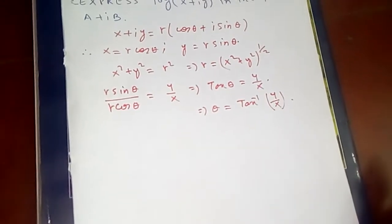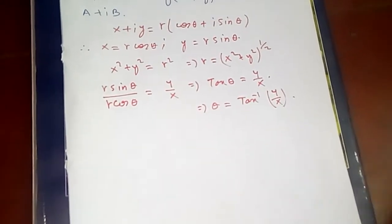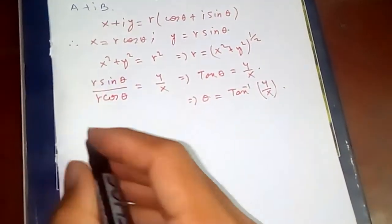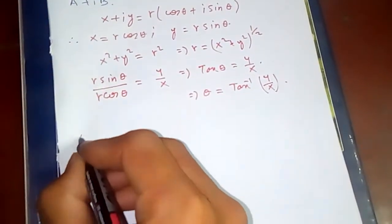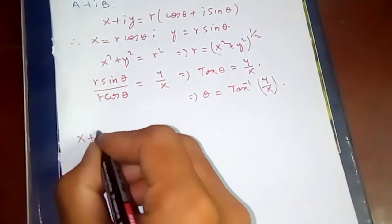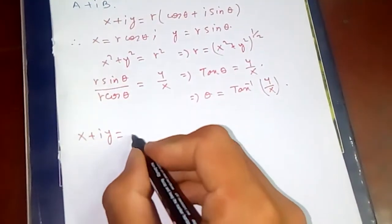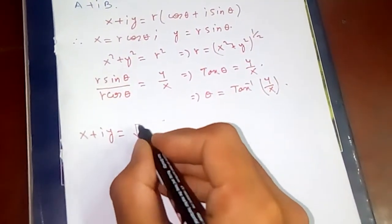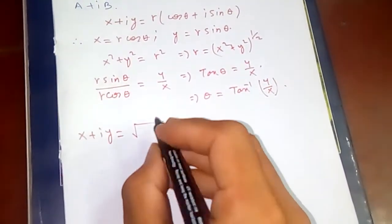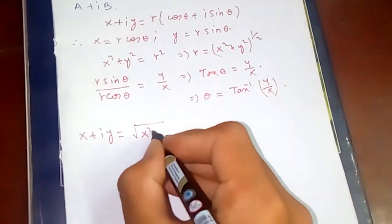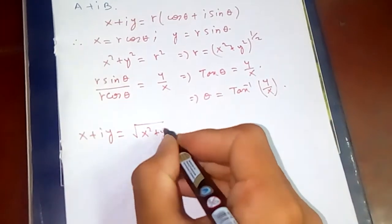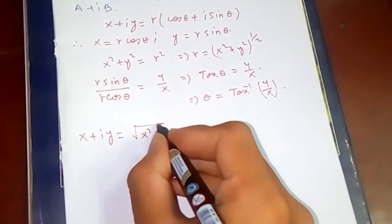Putting these two values into our polar form, we get x + iy = r(cosθ + i sinθ), where r is the square root of x² + y².